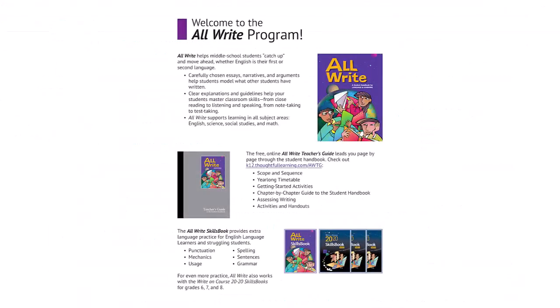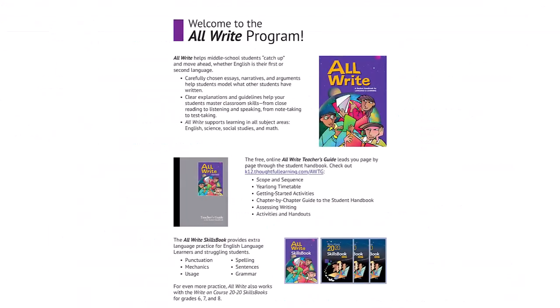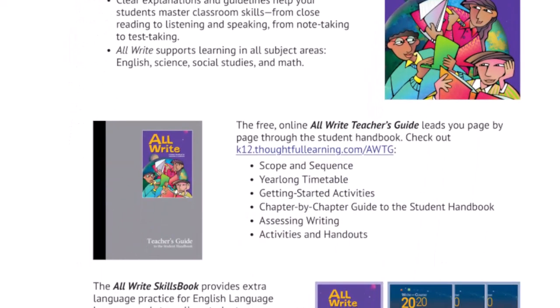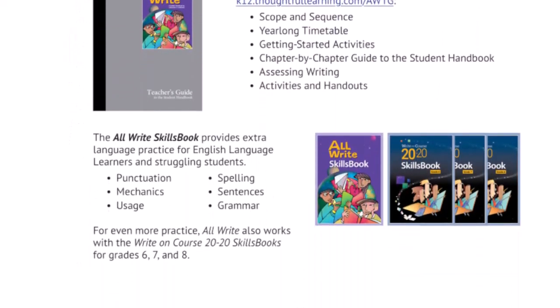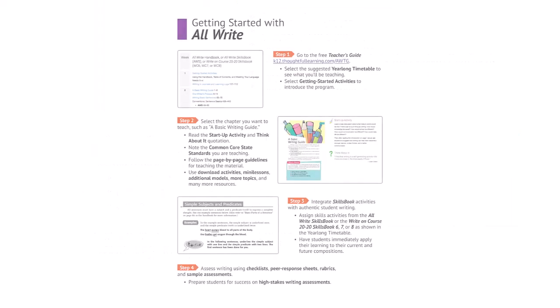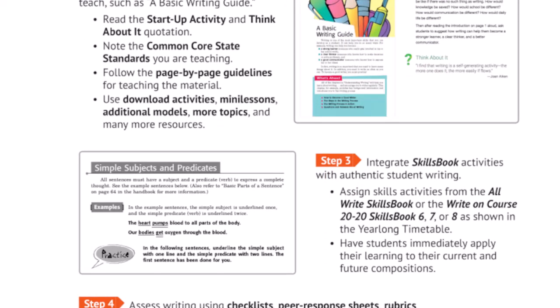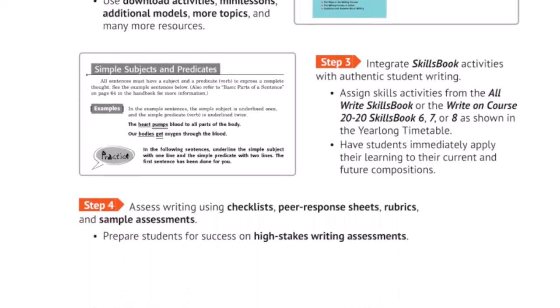The first page reviews the components of the program: the AllWrite Student Handbook, the free online teacher's guide, and the AllWrite Skills Book, along with the skills books from Write On Course. The second page then gives you a quick four-step process for getting started — step one, step two, step three, and step four. Thank you for joining us for this professional development for AllWrite.